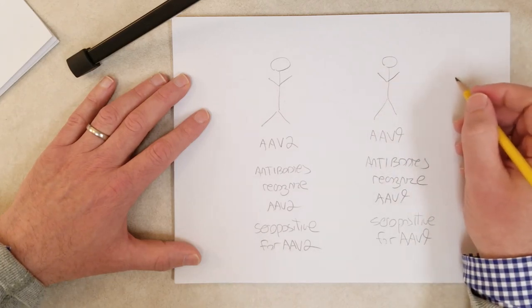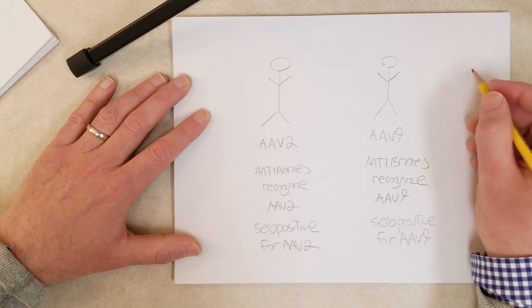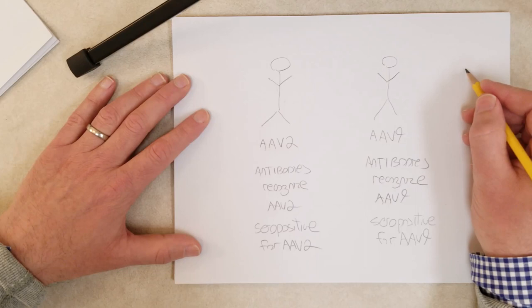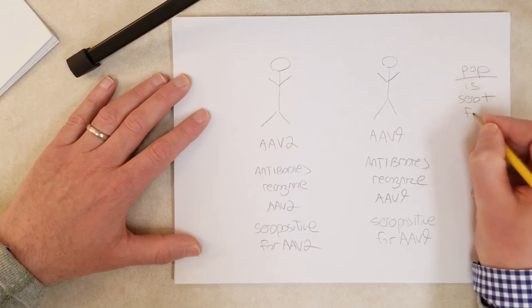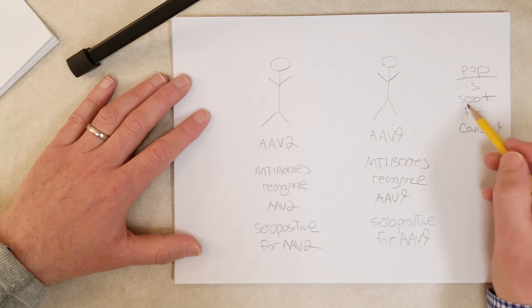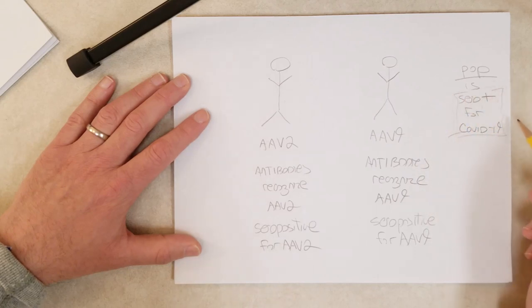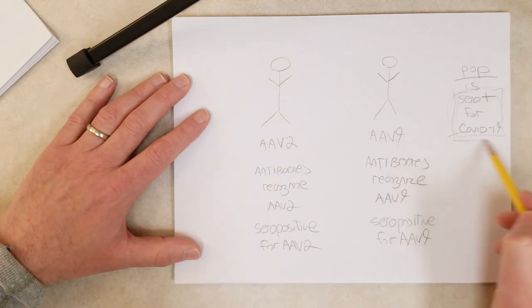So we can relate this to current what's going on right now with the COVID pandemic. One of my questions and many scientists have the same question, it's like how many of us, what percentage of our population is seropositive for COVID-19? How many of us have already been exposed to the virus? We don't know it. We were never sick. We never really showed any symptoms, but we've already been exposed and we already have antibodies towards it. So there's a lot of talk about restarting the economy and loosening social distancing rules. This is probably going to play a big role in how quickly those rules are eased and how quickly the economy is opened up again.